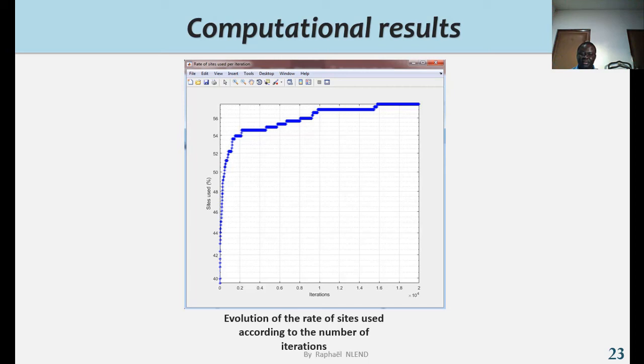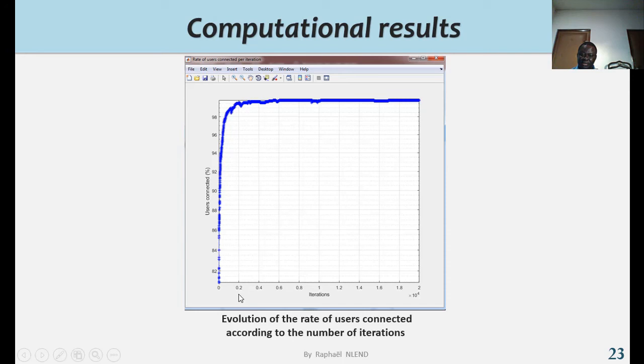Here we have the user connected, the evolution of the rate of users connected according to the number of iterations, where we have around 100 percent connected.